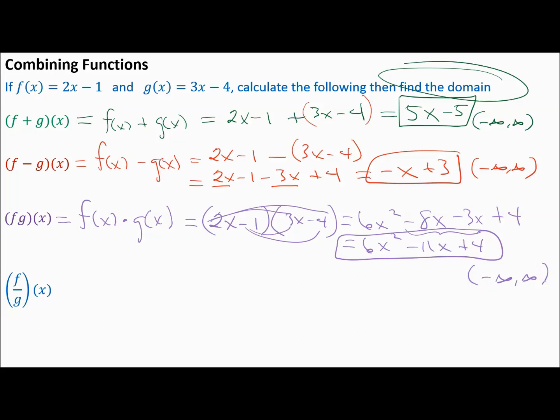Whenever you add, subtract, or multiply polynomials you get another polynomial, so the domain is all real numbers. When adding, just combine like terms. When subtracting, you must distribute that minus sign. When multiplying, use the distributive property to FOIL or expand depending on how many terms you have.